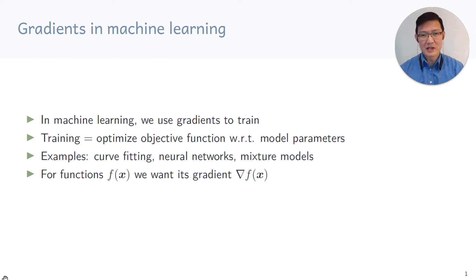In machine learning, we use gradients to train, and training means optimizing an objective function with respect to model parameters. For example, curve fitting, fitting neural networks, or mixture models.